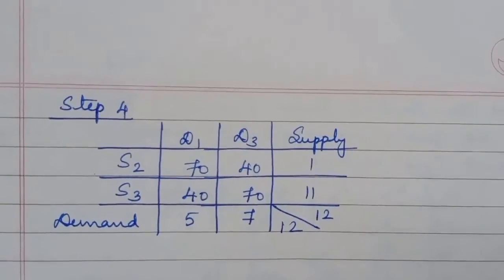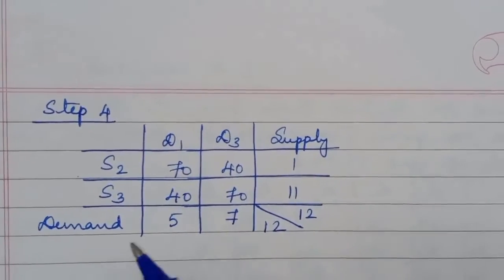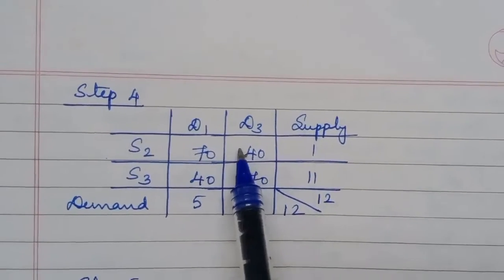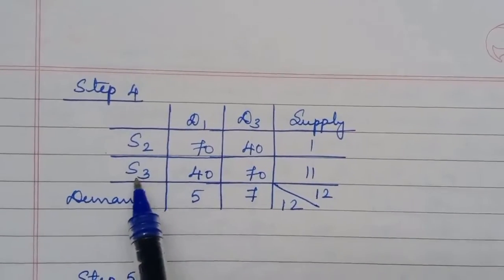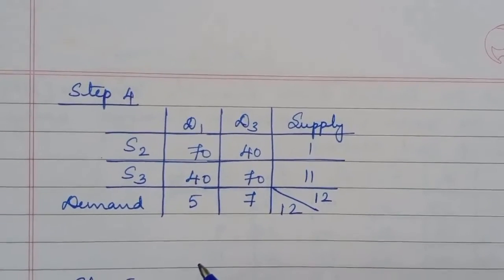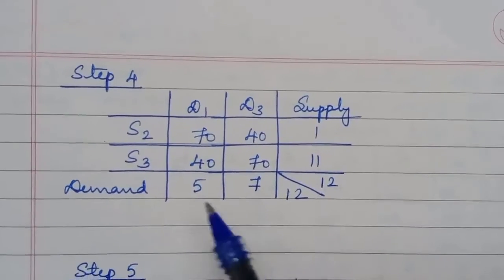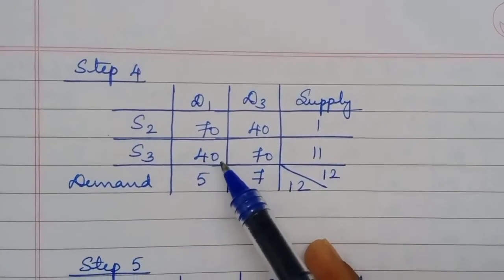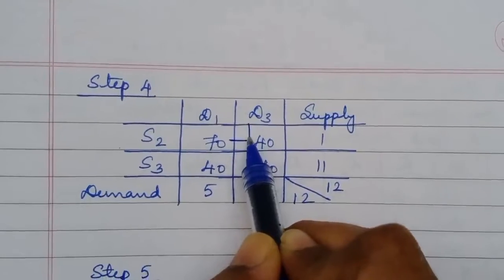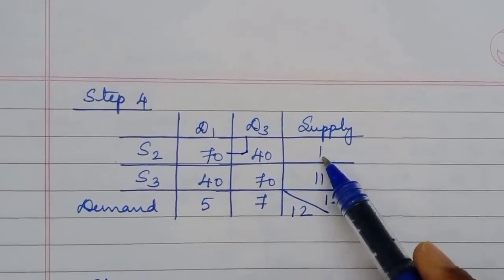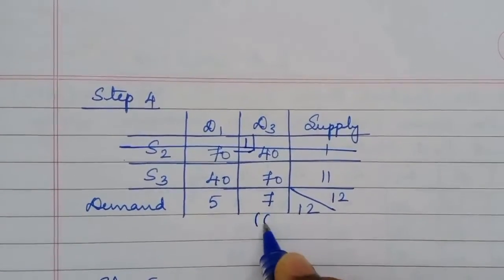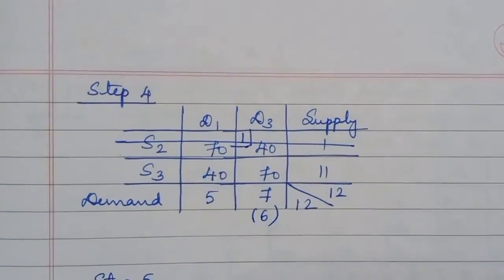In step 4, there are two cells with the same cost. You can allocate for either S2-D3 or S3-D1 — the final optimal solution will be the same regardless of which you pick for the initial basic feasible solution. I am going to allocate for S2-D3. The lesser of supply and demand is used; this cell is satisfied, leaving 6 more products demanded from D3.